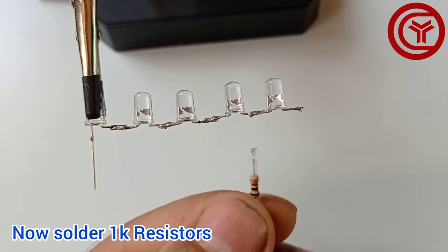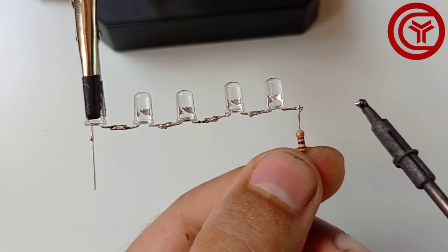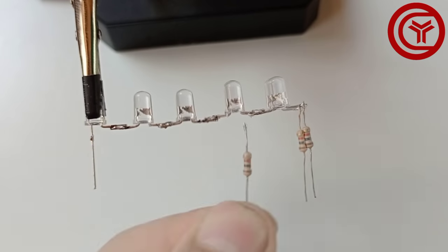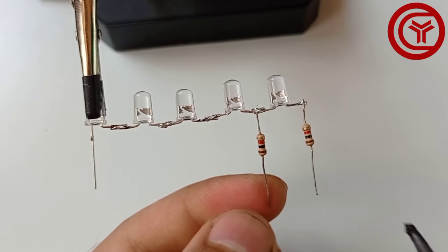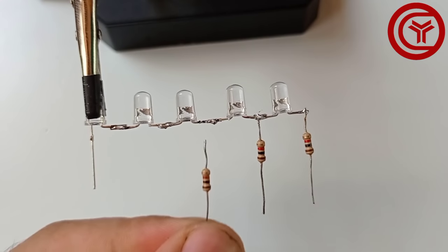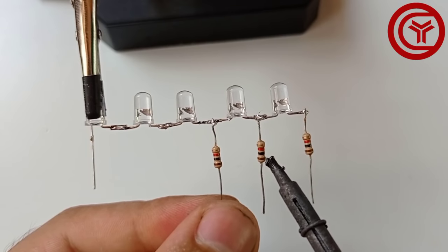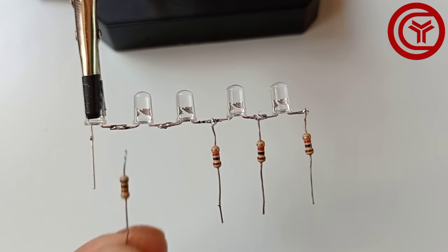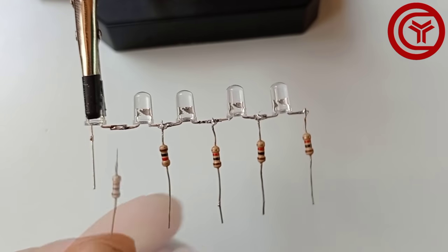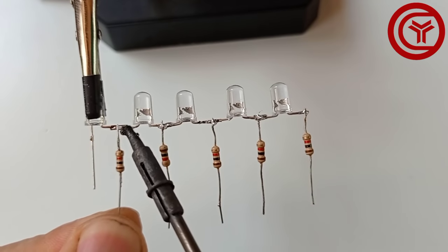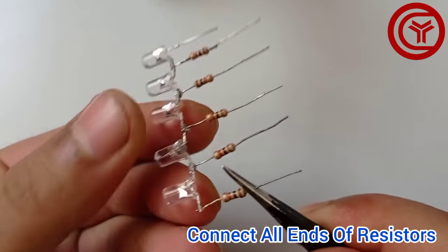Now solder 1 kilo ohms resistors. Connect one side of all resistors together.